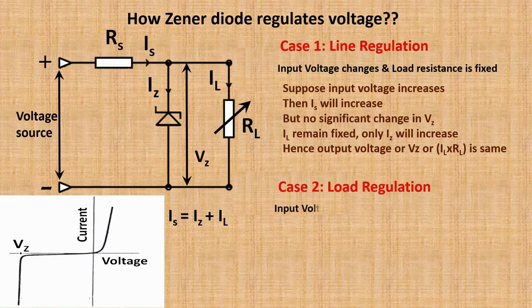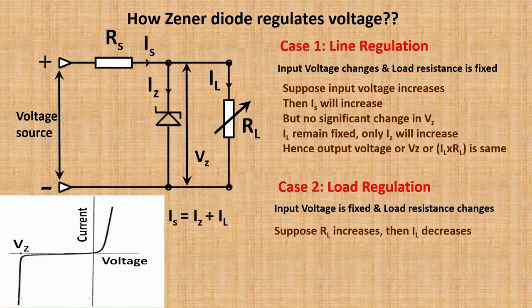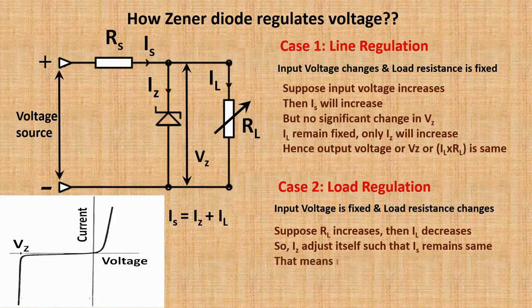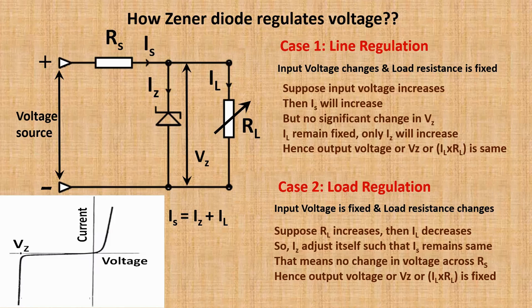Case two is load regulation: input voltage is fixed and load resistance changes. Suppose R_L increases, then load current decreases. I_Z adjusts itself such that the series current I_S remains the same. Since I_S is the same, the voltage drop across the series resistor R_S will also be the same. Hence output voltage — V_Z or the product of I_L into R_L — is also fixed.